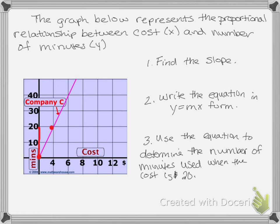I'm going to draw up to 20 and then over to 4. My rise is the change in y — I went from 0 to 20, an increase of 20. My run is the change in x — I went from 0 to 4, an increase of 4. To find the slope, I use rise over run: 20 over 4. Simplifying, 20 divided by 4 gives me 5. So my slope is m equals 5.